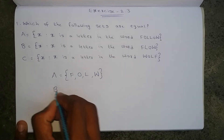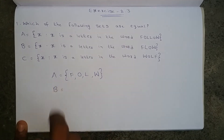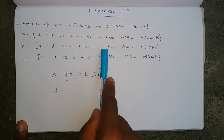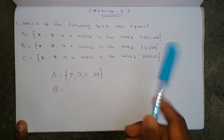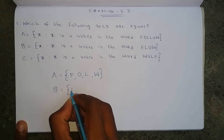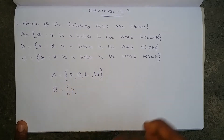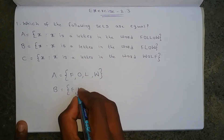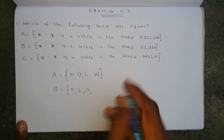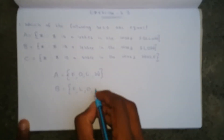Next, set B: X such that X is a letter in the word FLOW. So set B equals {F, L, O, W}.